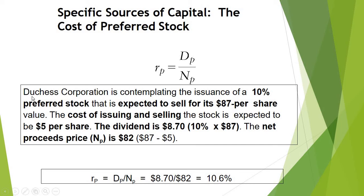Now let's look at the example. The Dutchess Corporation is trying to find out the cost of its preferred stock. The firm's preferred stock provides a 10% dividend payment. The expected selling price of this preferred stock is $87 per share, and the cost of issuing and selling is $5 per share. The dividend is 10% of $87, so the dividend payment of this preferred stock is $8.70.